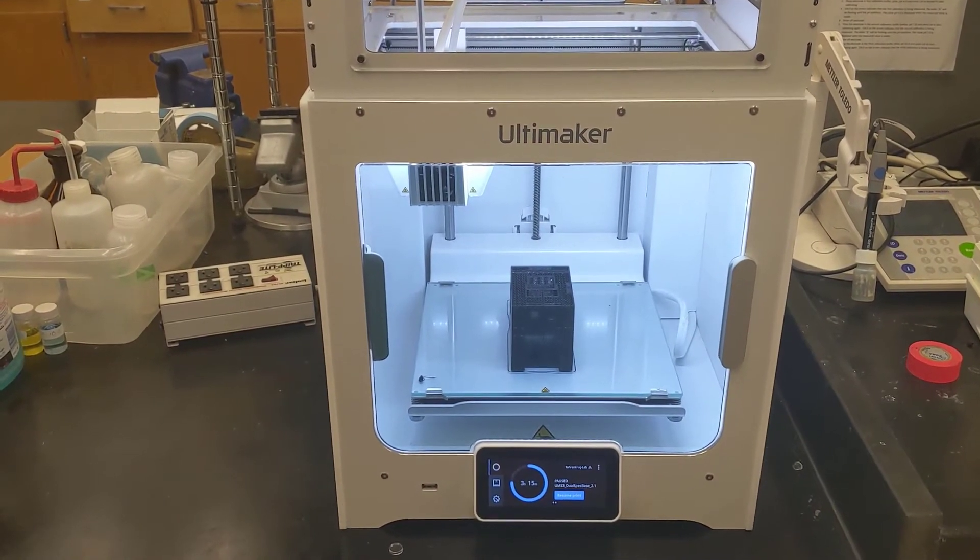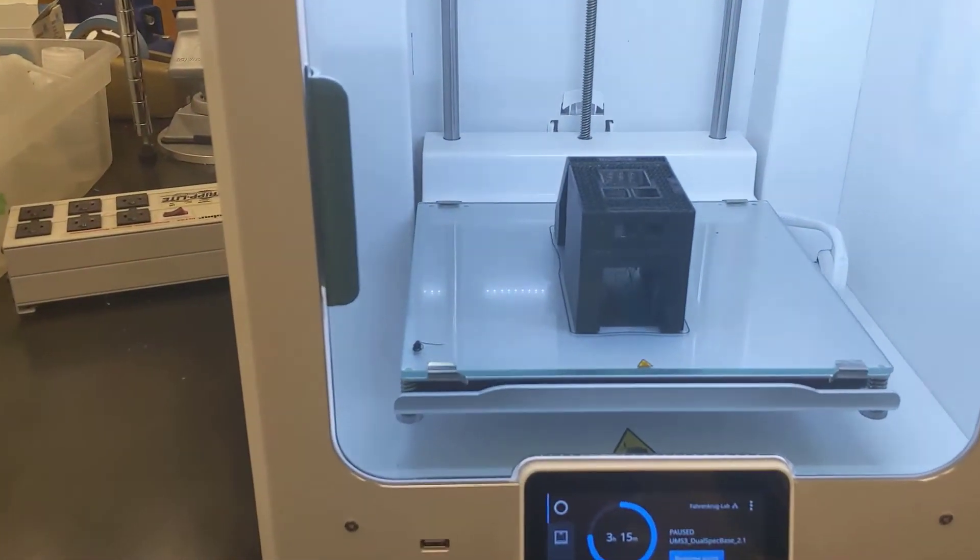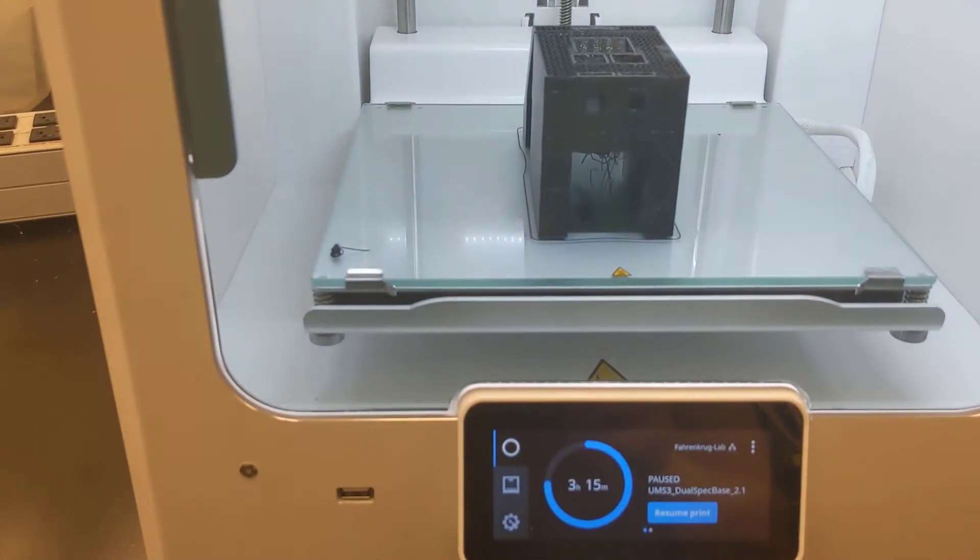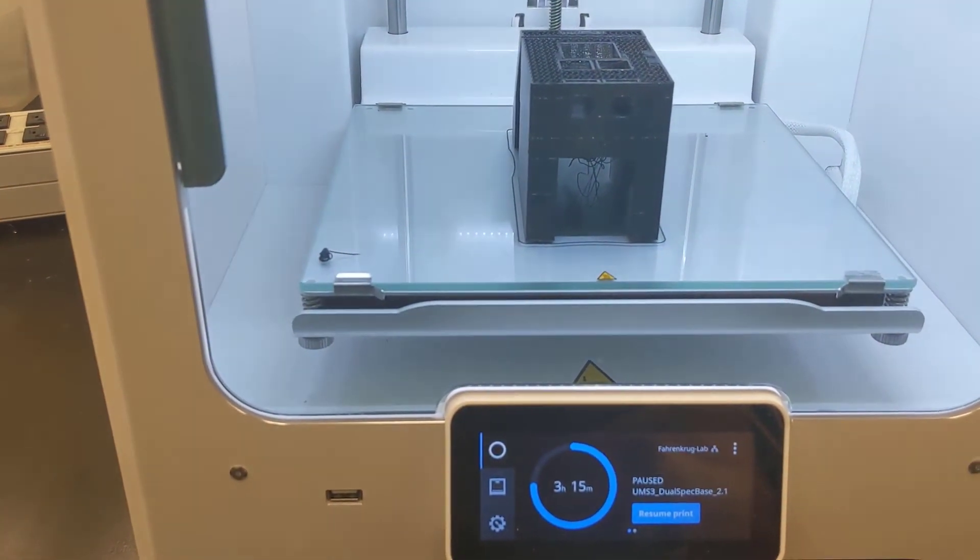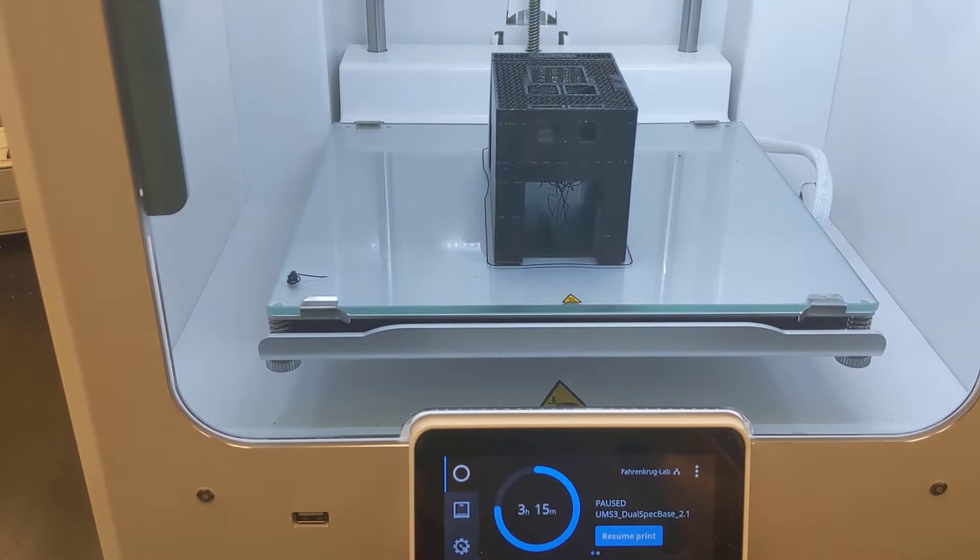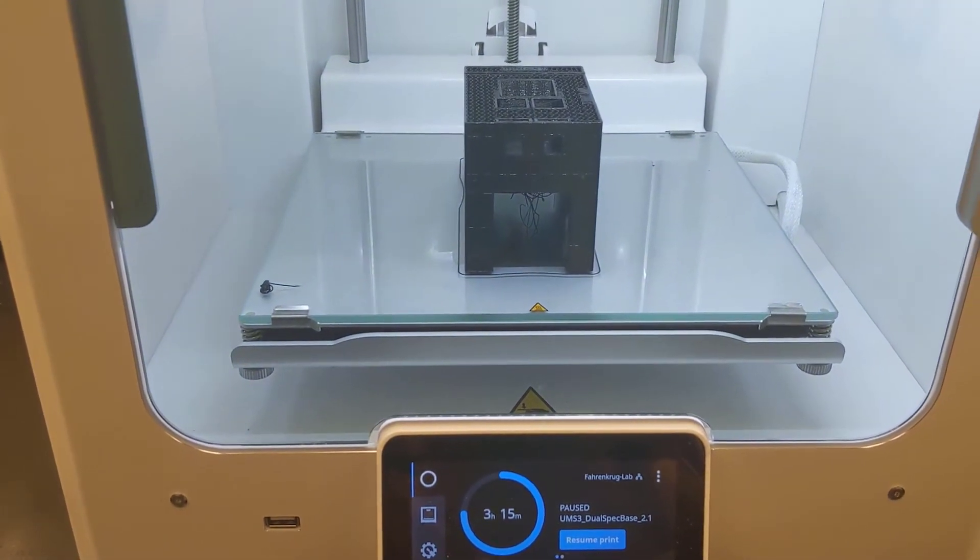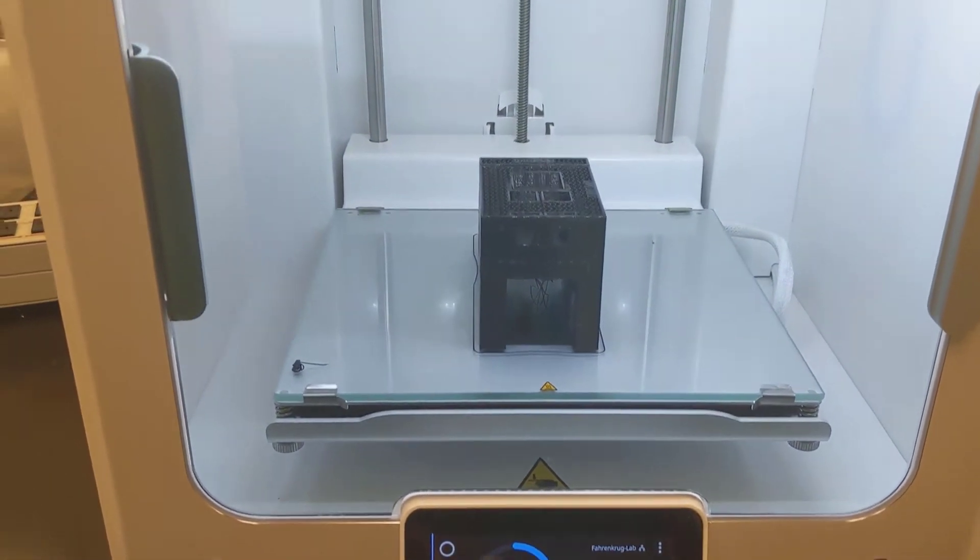And that's what I'm going to walk you through right now. So what I have is an object that has about three hours left of printing, and the unit's going to automatically pause. It's going to give you an alert that says one of the spools run out.